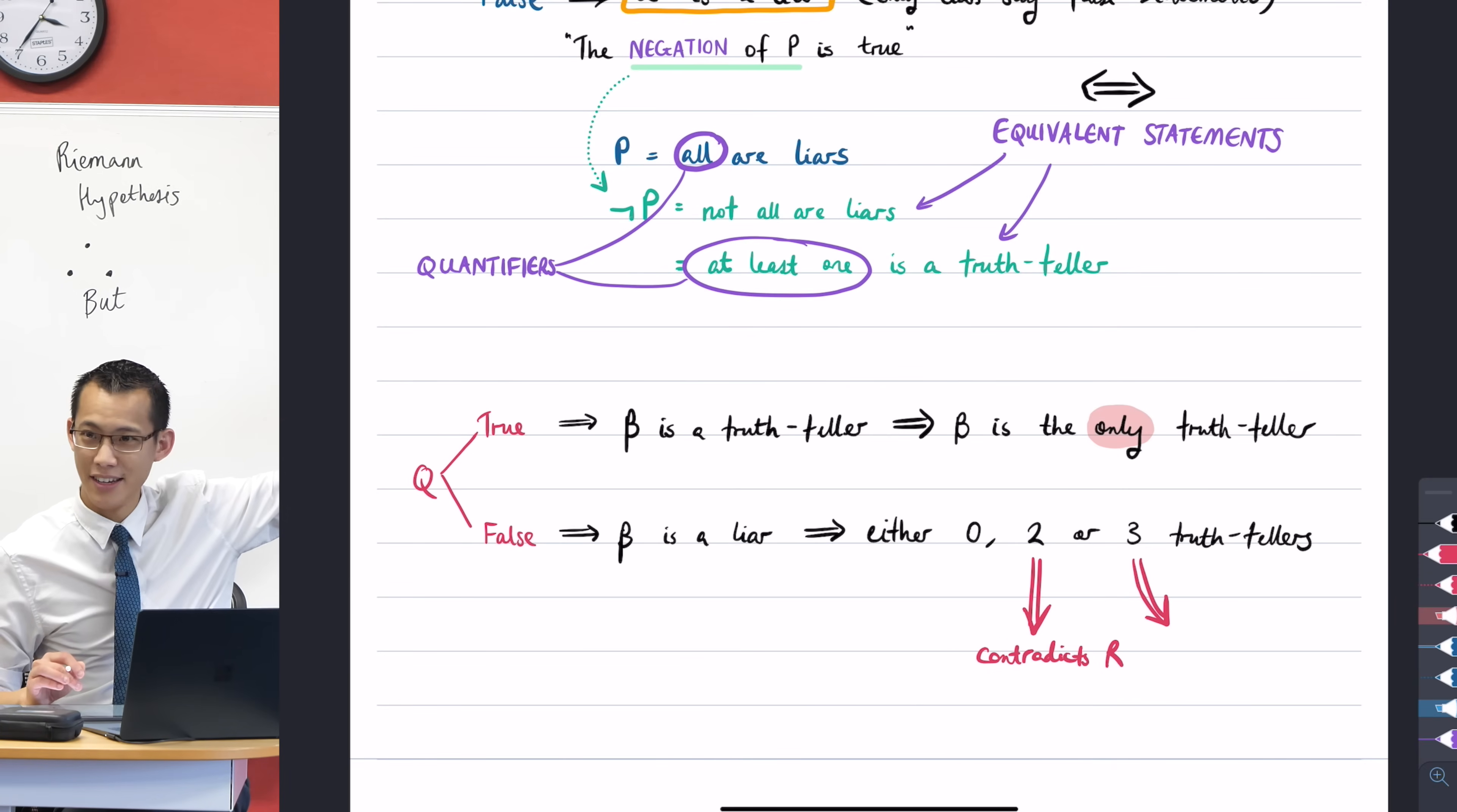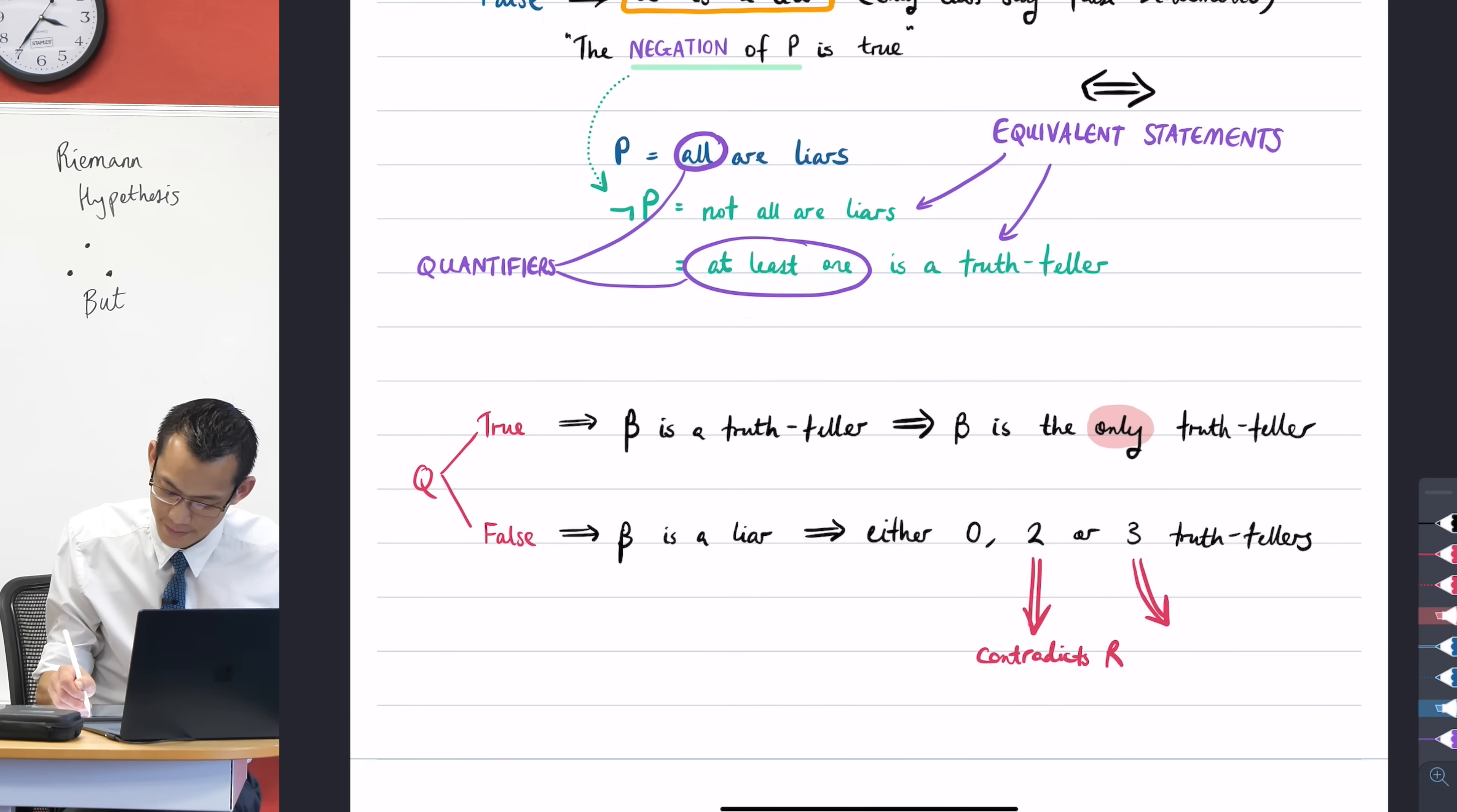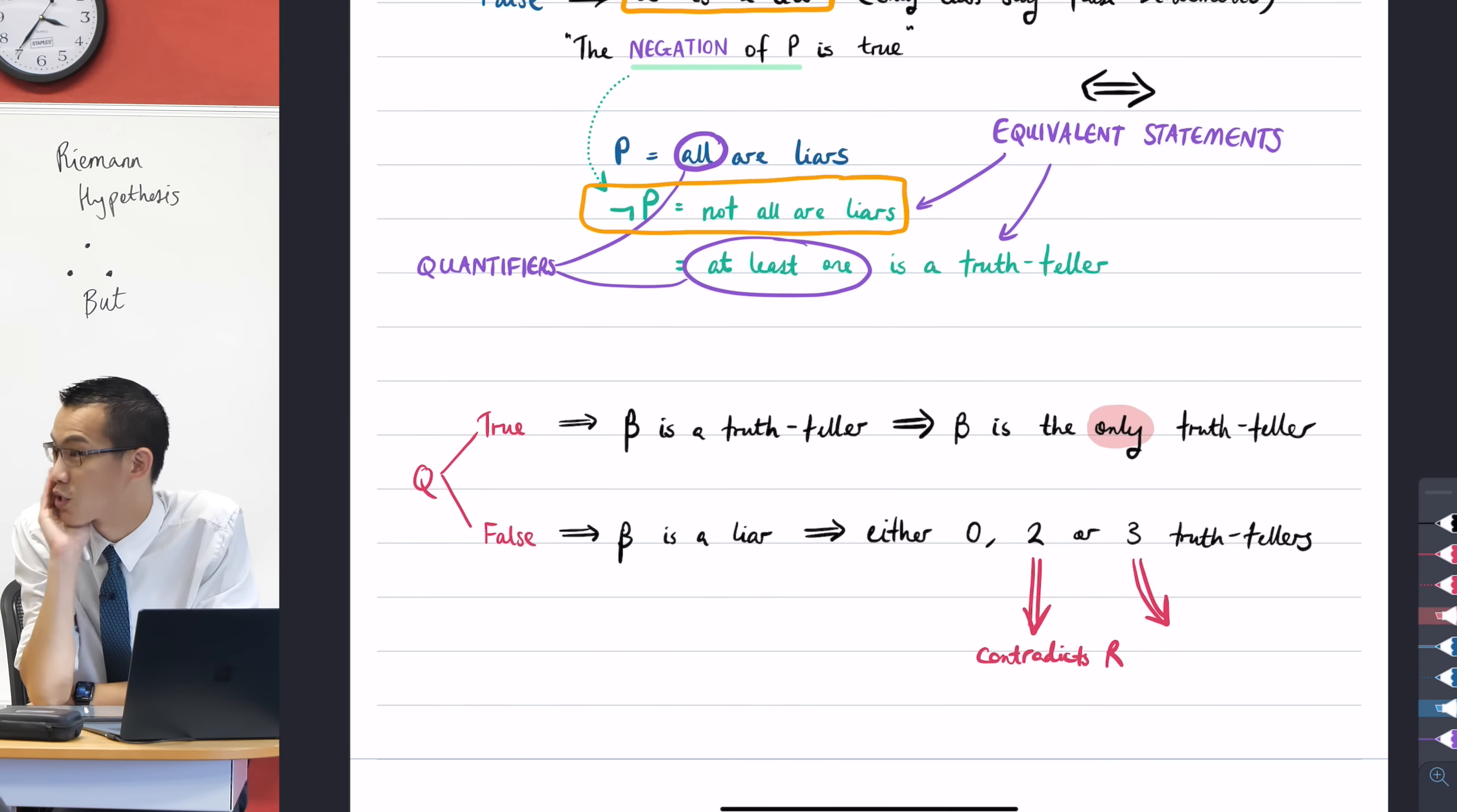Statement P was that all are liars, but we know that's actually not true. We know that the negation of P is true. So I'm going to highlight that in orange as well. This is true here. I don't need to give it another name, because it already has a name, not P.